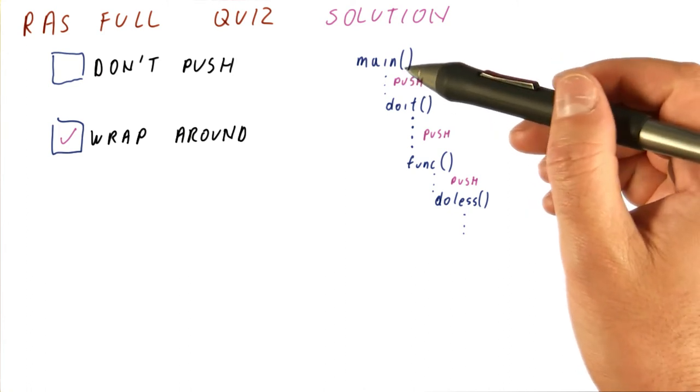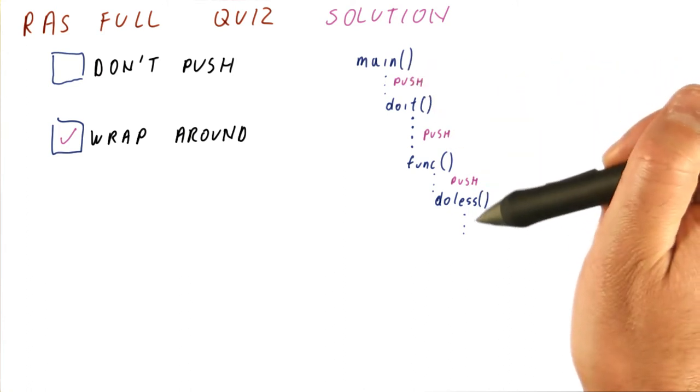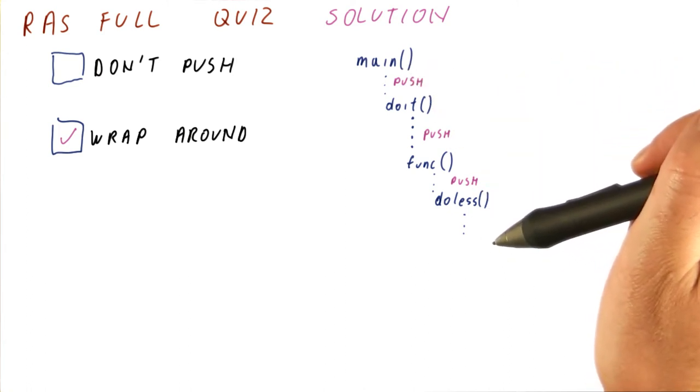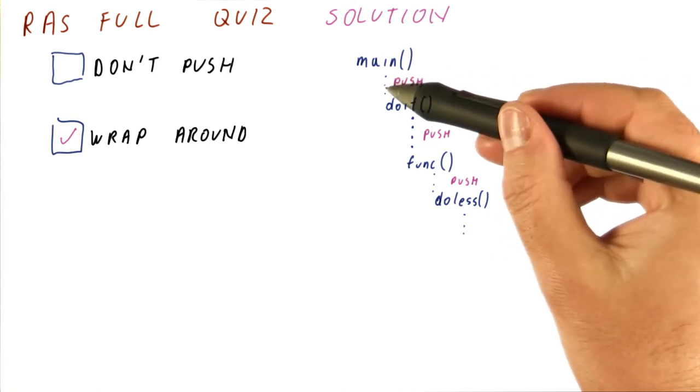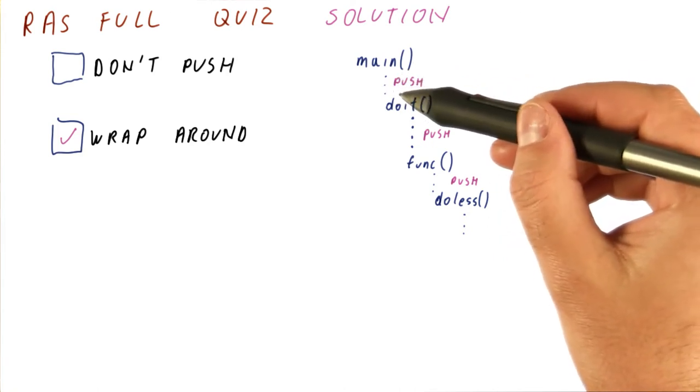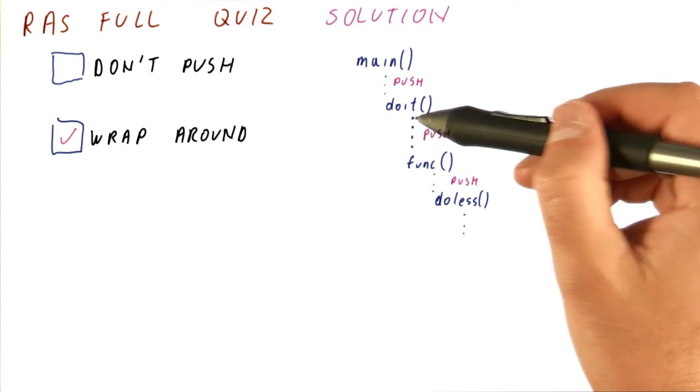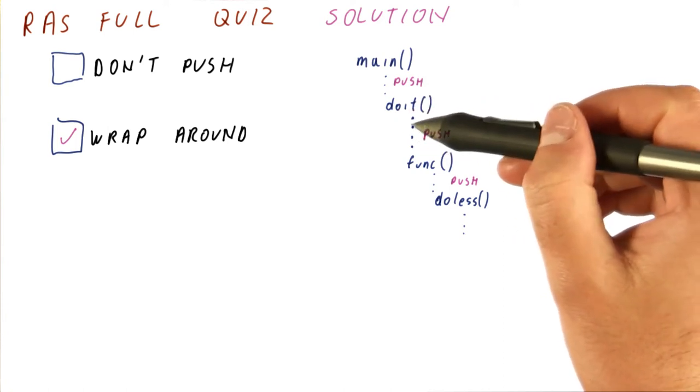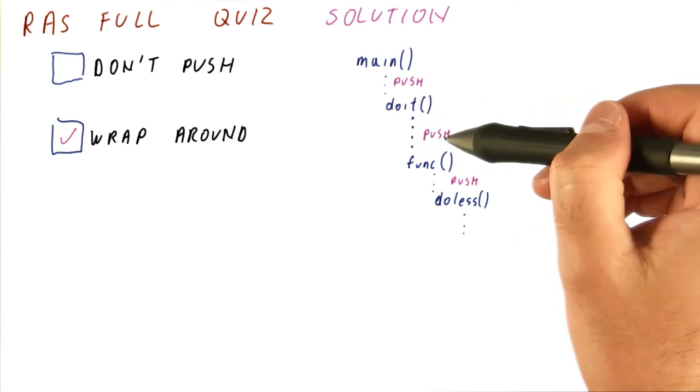To see what happens here without running out of space, let's say that our RAS only has two entries. The first entry will be consumed by pushing the return address when main calls doit. The second one will be consumed when we call the function func from doit.